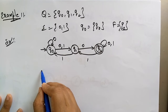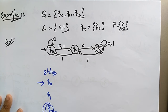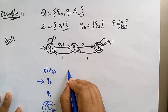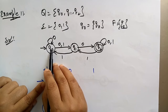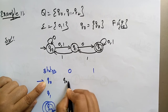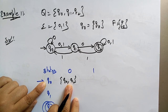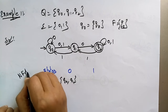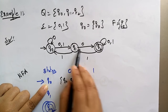The states are q-naught, q1, and q2. This is the initial state and this will be the final state. The inputs are 0 and 1. Q-naught on 0 goes to q-naught as well as q1. Did you observe? You are having multiple states here — this is NFA. In NFA, for a particular specific input you get multiple states, but in DFA you can't. Q-naught on 1 goes to q1.